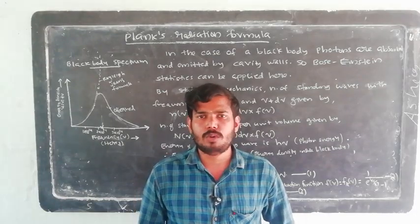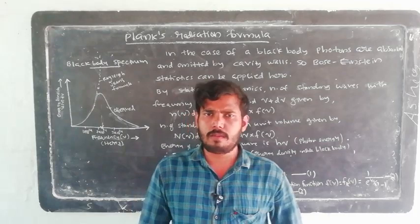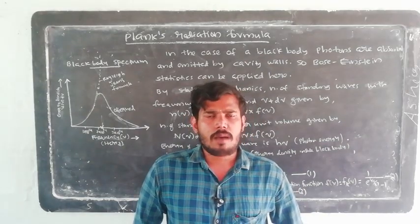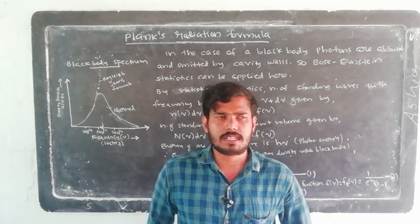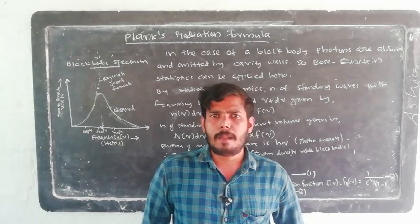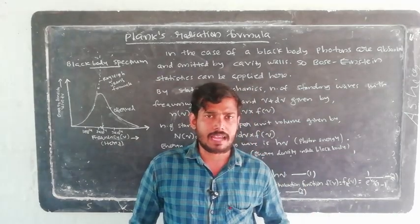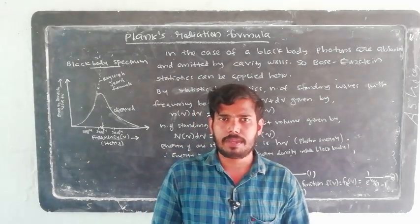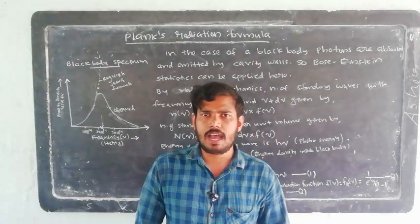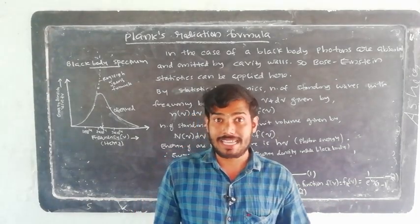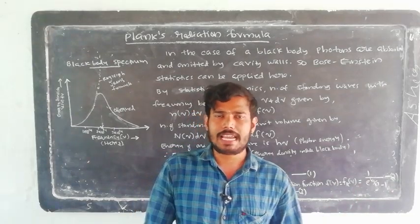Max Planck has a formula to modify the Rayleigh-Jeans formula. Planck's radiation formula will be explained here. We are going to apply the Bose-Einstein statistics to the black body. The radiation is represented by photons, and the photons are related to statistical mechanics through Bose-Einstein statistics. Max Planck applied the Bose-Einstein statistics to the black body.